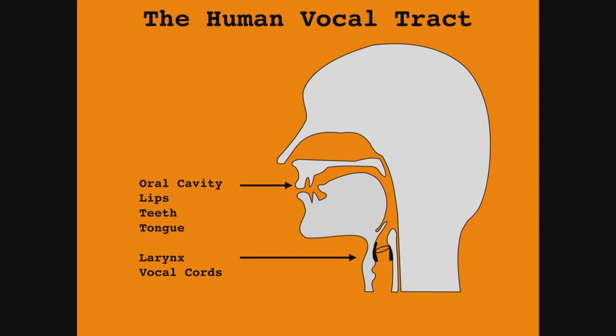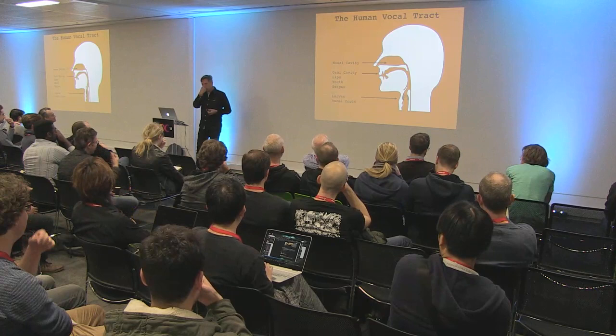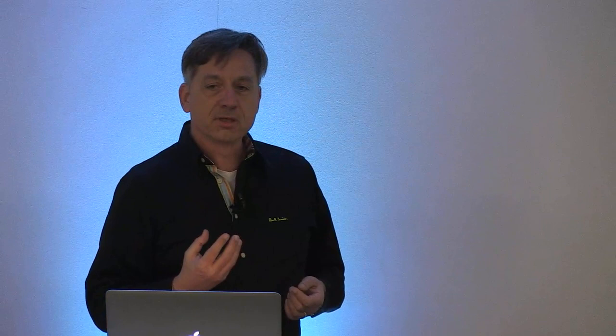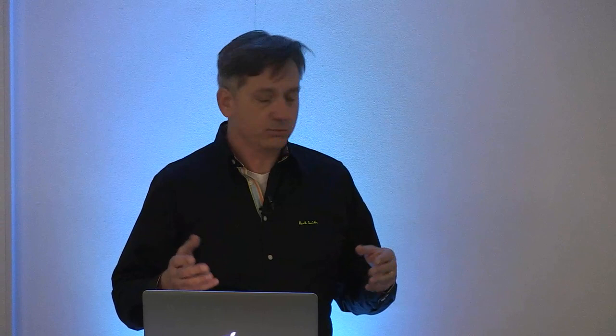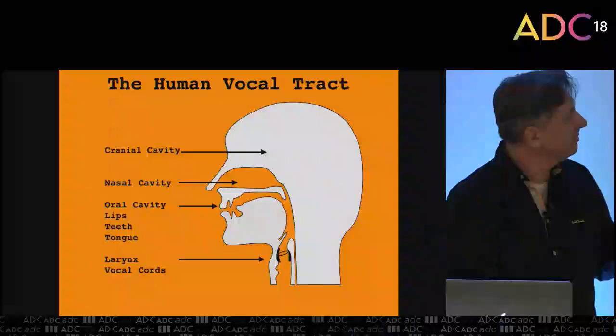There's also a nasal cavity. Let's do an experiment — utter 'mmm' and continue, then pinch your nose. What happens? It doesn't work. When we utter an M, that sound actually comes out of our nose. M and N are called nasals because they come out of the nose. So the nasal cavity is an important part of the vocal tract, and if we want to model human speech we have to consider it.